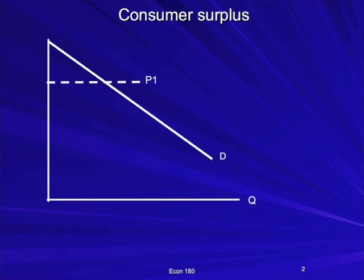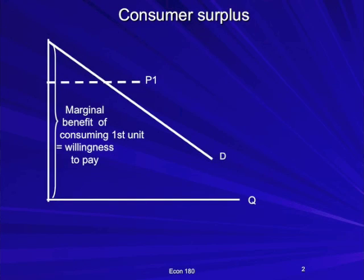Let's take a look at a demand curve and build up a consumer surplus story. We've got a standard setup with price on one axis and quantity on the other, and a market price. What a demand curve represents is really the willingness of consumers to pay for a product. The marginal benefit of the first unit is the height of the demand curve. At any particular quantity, the height of the demand curve is what consumers were willing to pay, and they may be thrilled if they paid less.